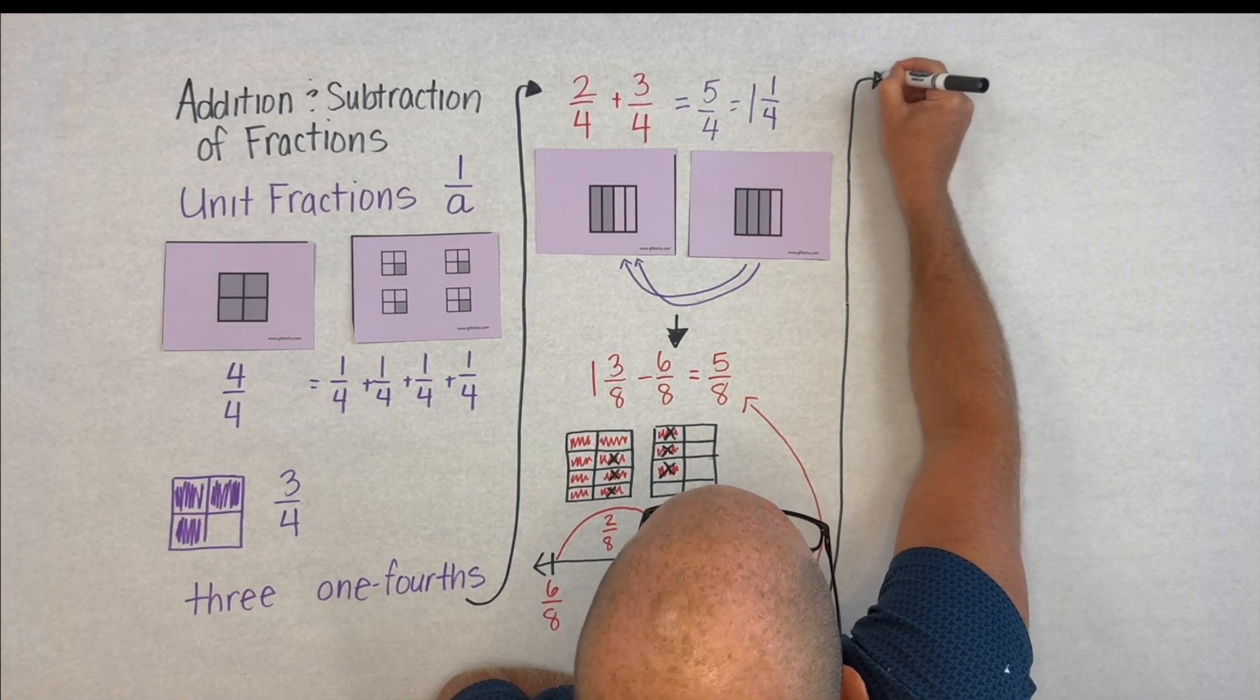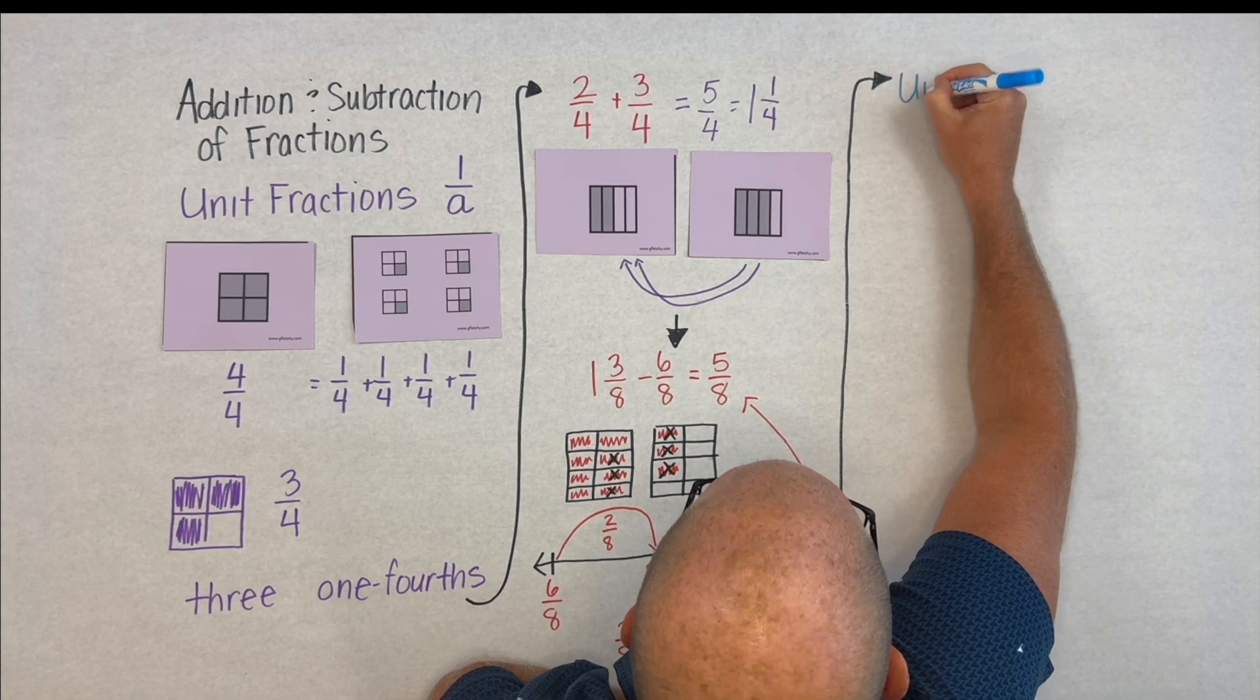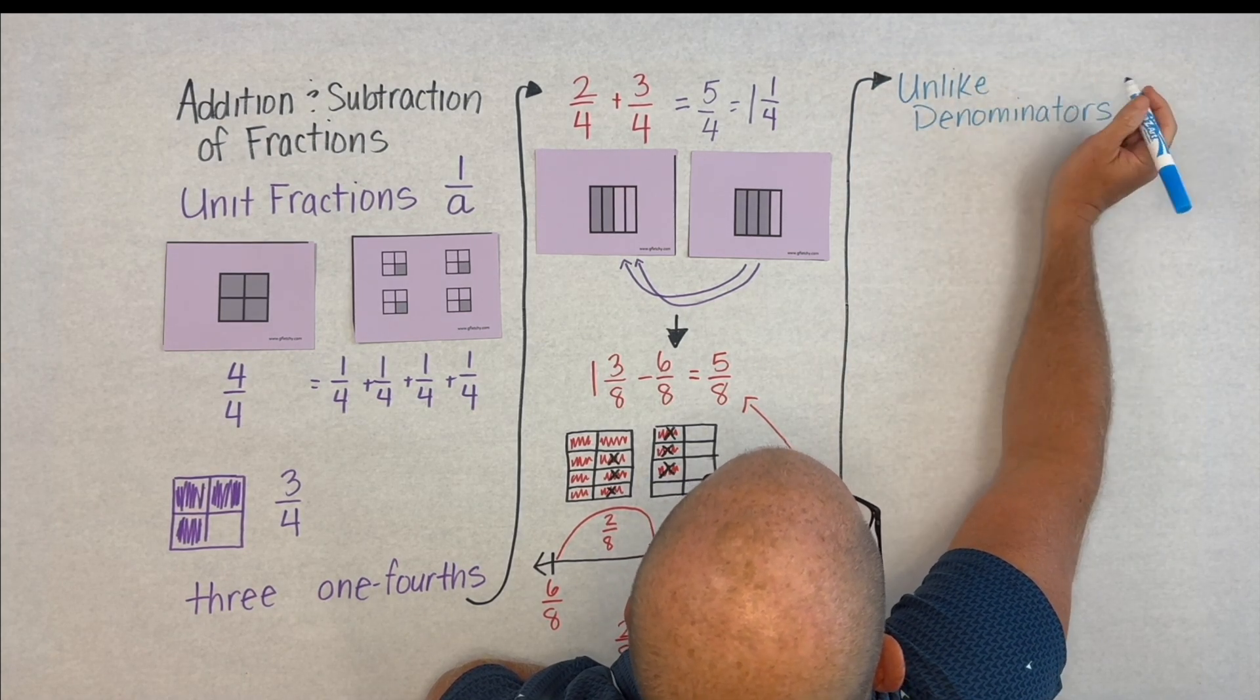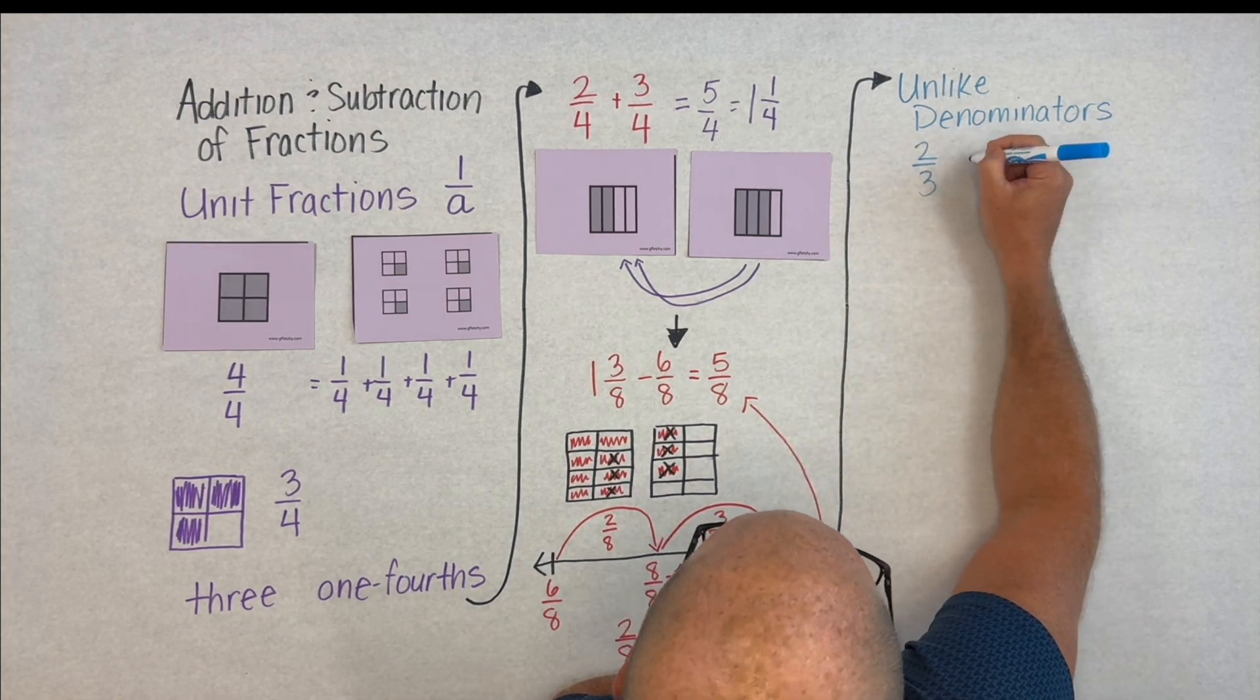So this works nicely when we're talking about common denominators, but what might it look like if we use unlike denominators? And here is where we can be really intentional.